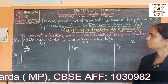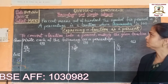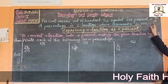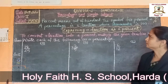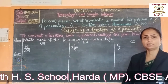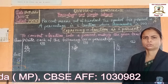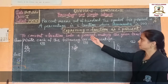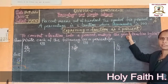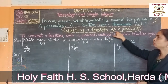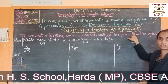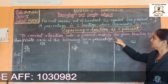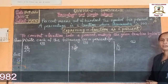First we will see what is percent. Percent means out of 100. The symbol for percent is this, and a percentage is a fraction whose denominator is 100. Now we will see expressing a fraction as a percentage — how to convert a fraction into percentage. To convert a fraction into percent, multiply the given fraction by 100 percent.